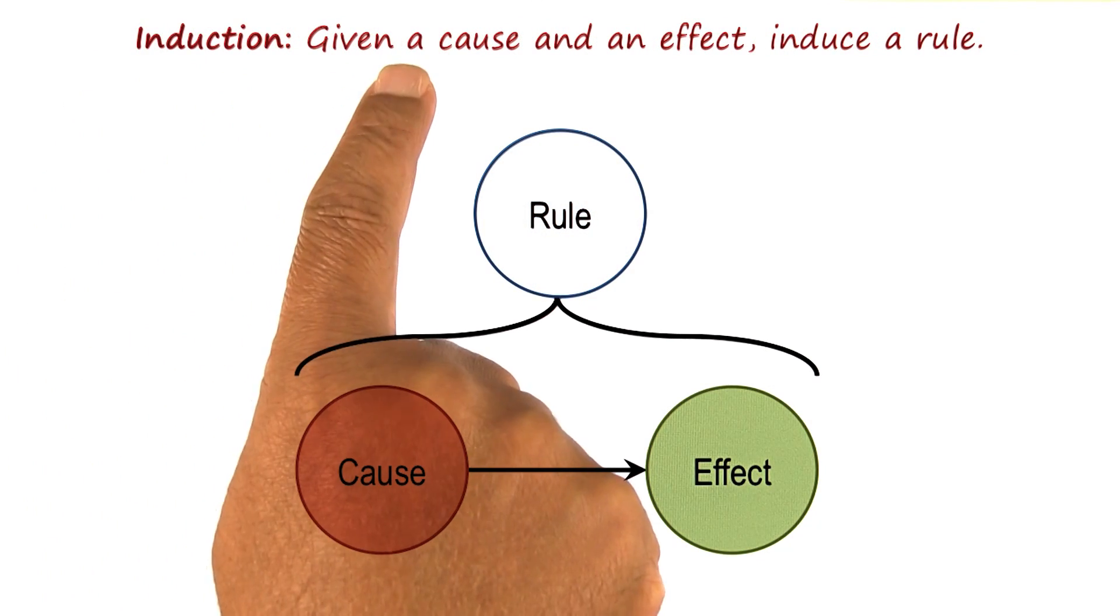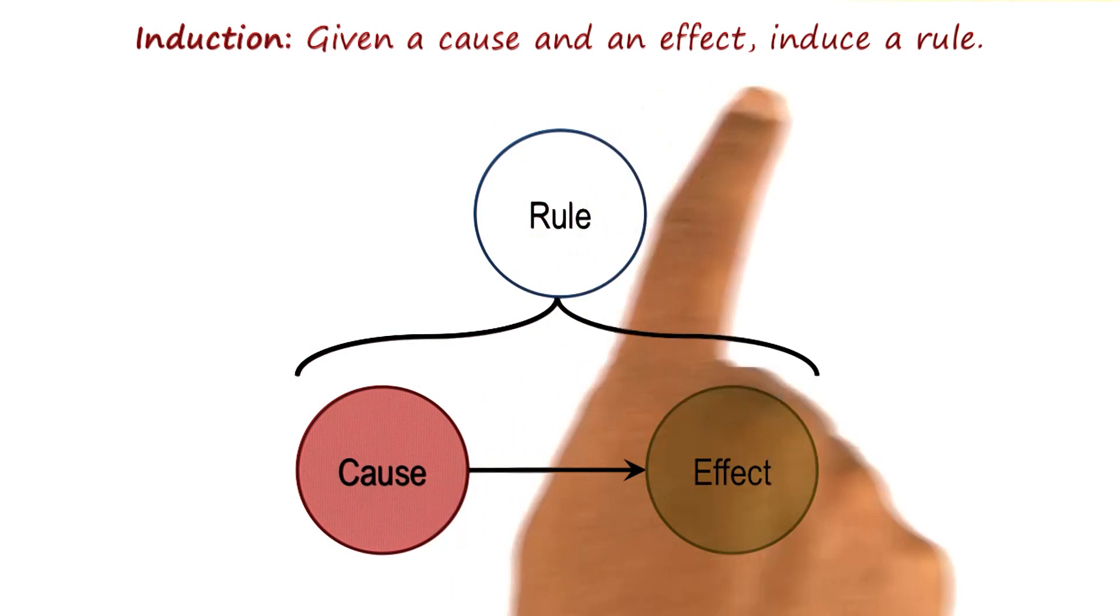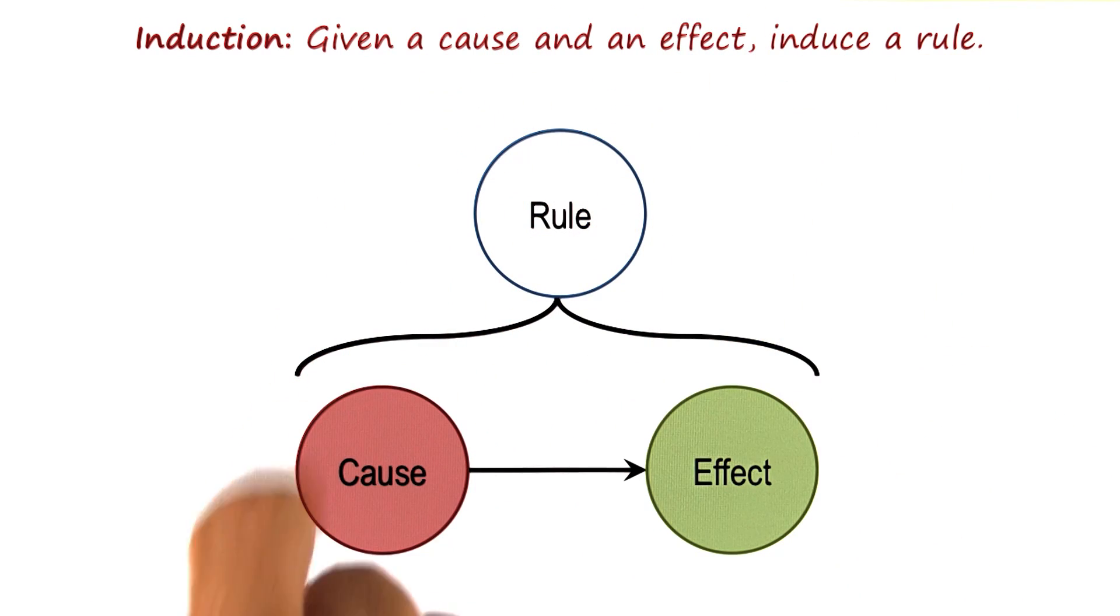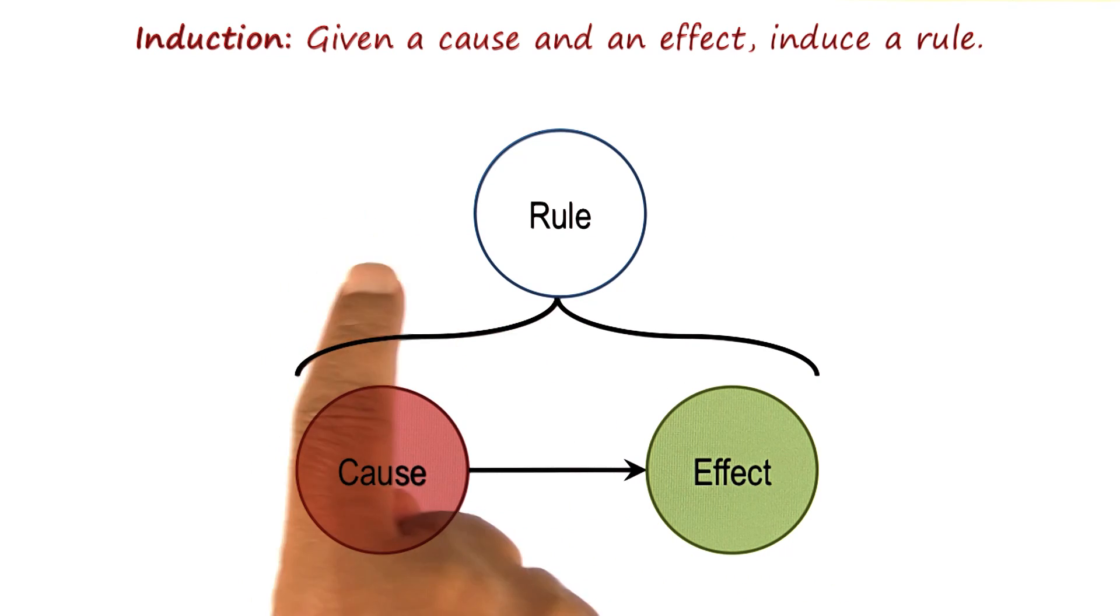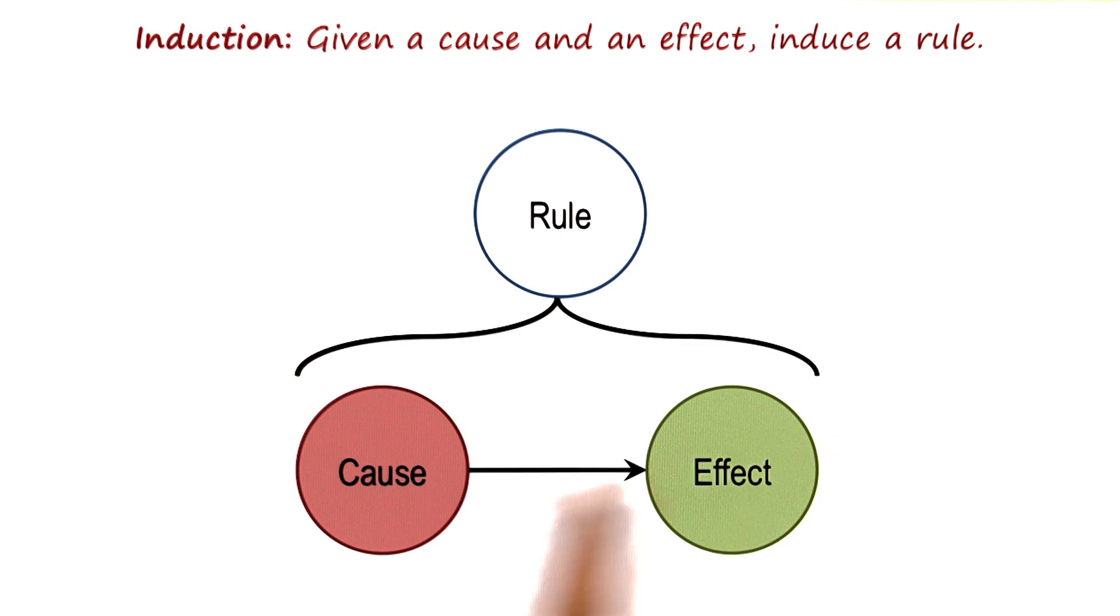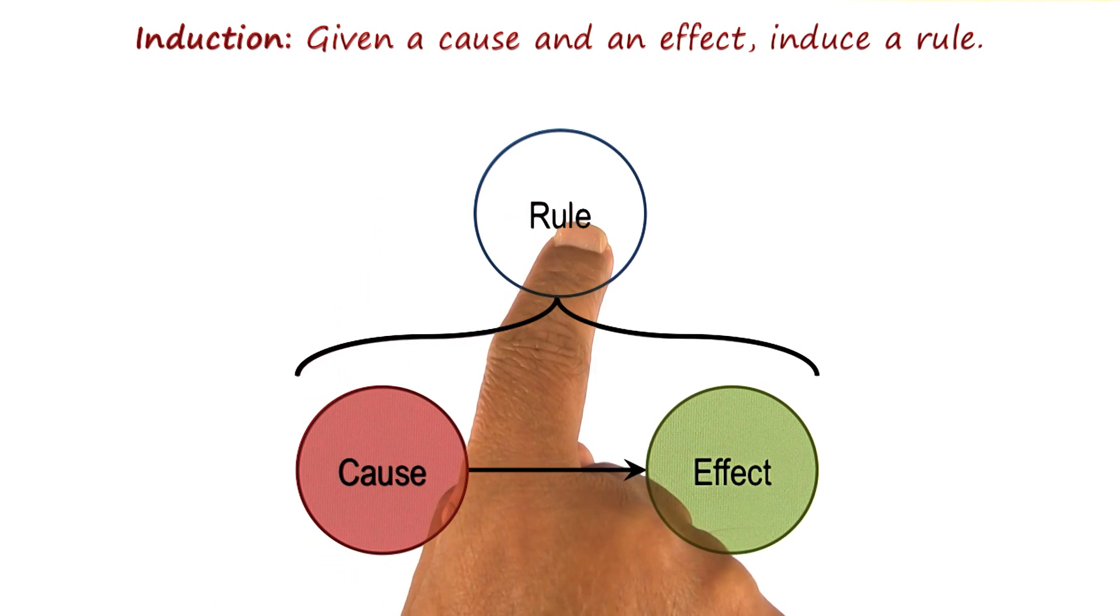Now let us look at induction. Given a relationship between a cause and an effect, we can try to induce a rule. For example, if we observe repeatedly that when it is cloudy, it rains, then we may induce a rule: if it is cloudy, then it rains.